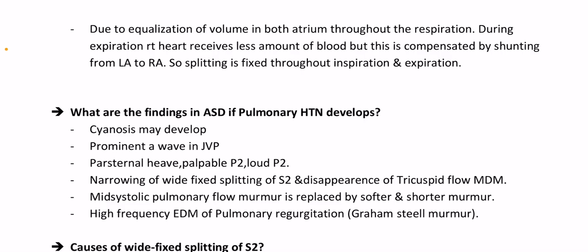What are the findings in ASD if pulmonary hypertension develops? Cyanosis may develop; prominent A-wave in JVP; parasternal heave; palpable P2; loud P2; narrowing of wide fixed splitting of the second heart sound; disappearance of the tricuspid flow MDM. The mid-systolic pulmonary flow murmur is replaced by a softer and shorter murmur. A high-frequency early diastolic murmur of pulmonary regurgitation, the Graham Steell murmur, may appear.